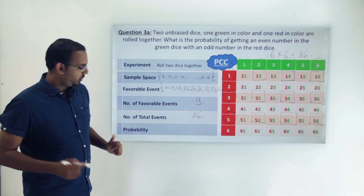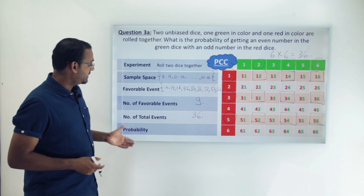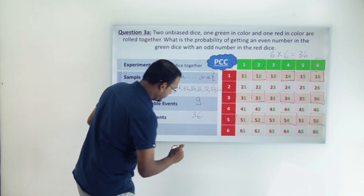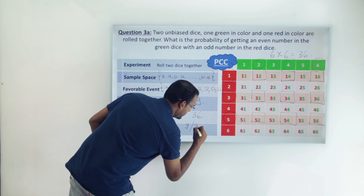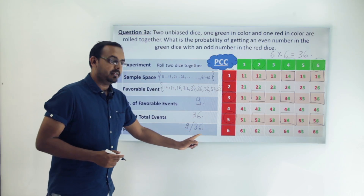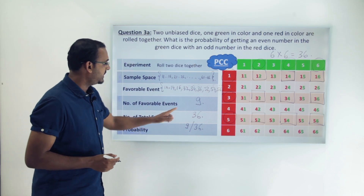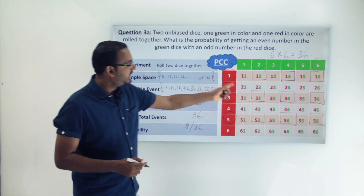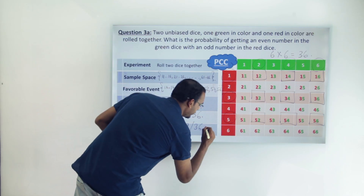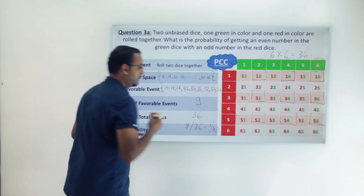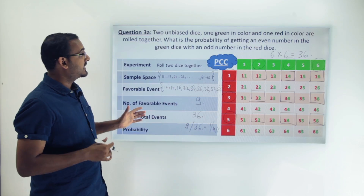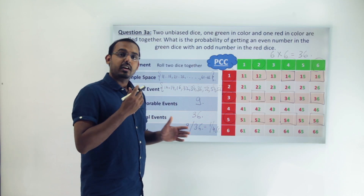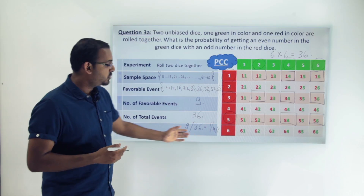Now we know how to calculate the probability: it is the ratio of the number of favorable events to the number of total events. So the probability is 9/36, because favorable events = 9 and total events = 36. This simplifies to 1/4. So the probability of getting an even number on the green die and an odd number on the red die is 1/4.